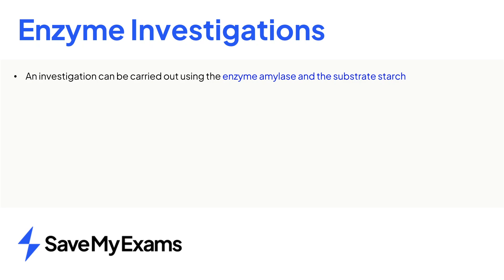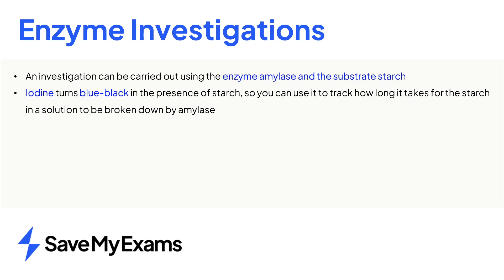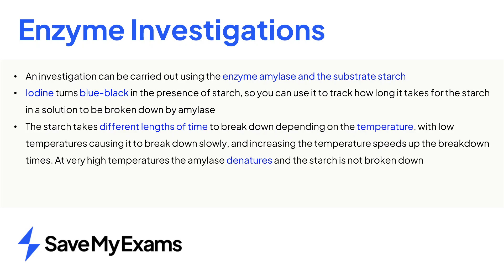In summary, the enzyme amylase can be investigated. Amylase breaks down starch into maltose and iodine turns blue-black in the presence of starch. So this can be tracked during an experiment to see how long it takes amylase to break down starch in different conditions.